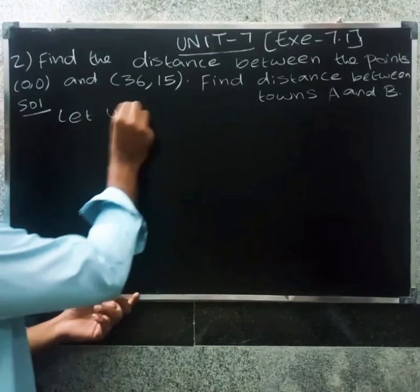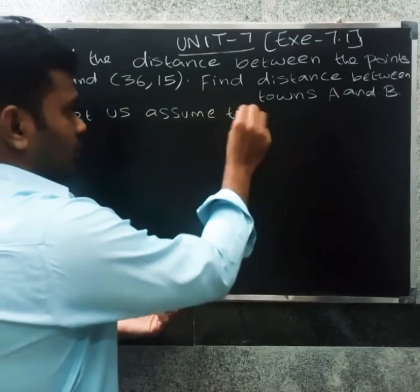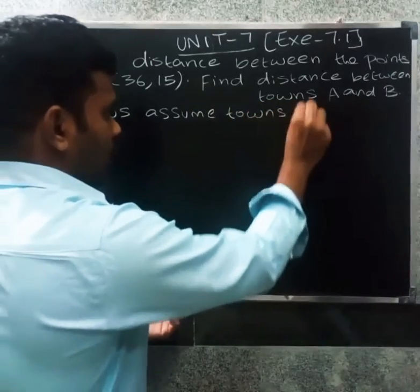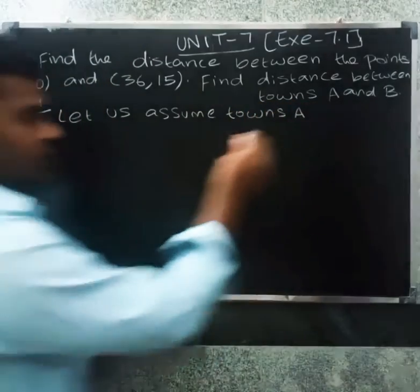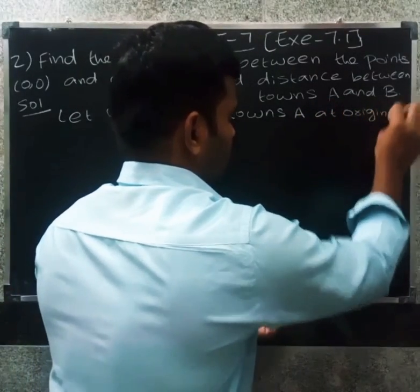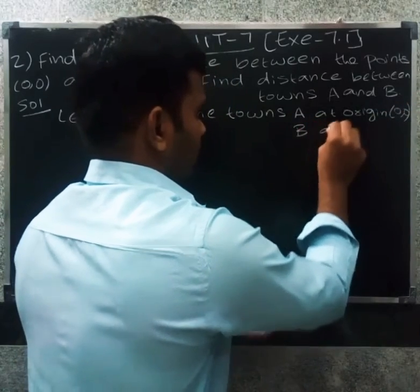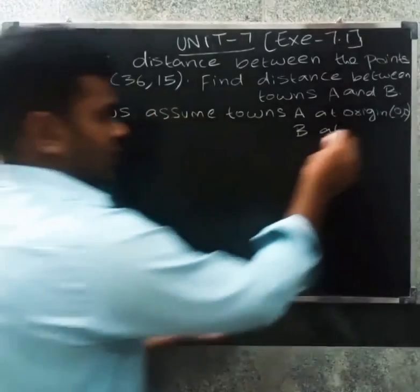So let us assume the towns. Let us assume town A at origin 0,0 and B at 36,15.